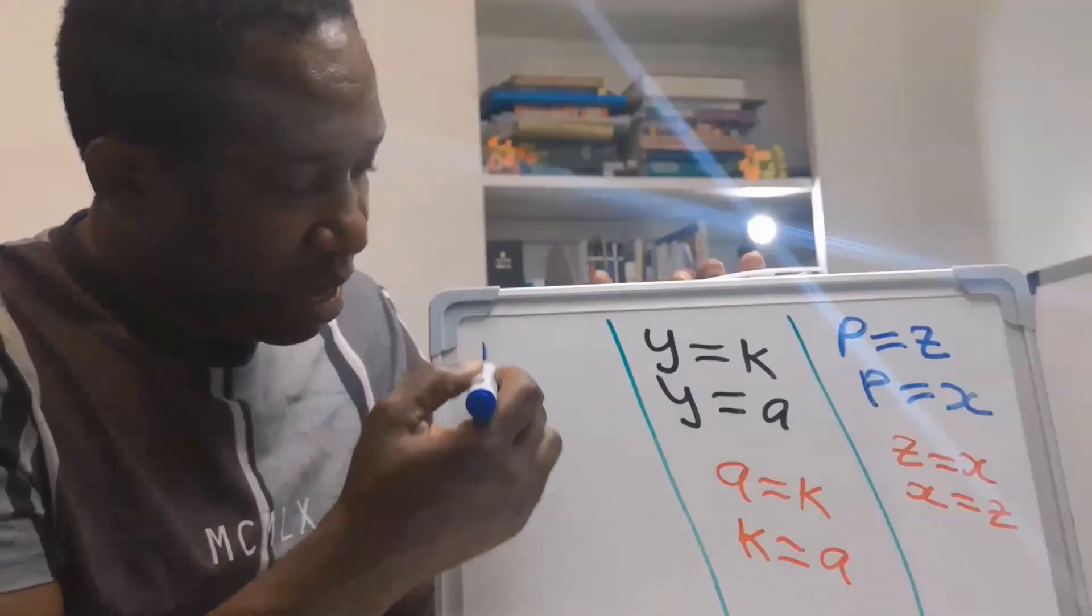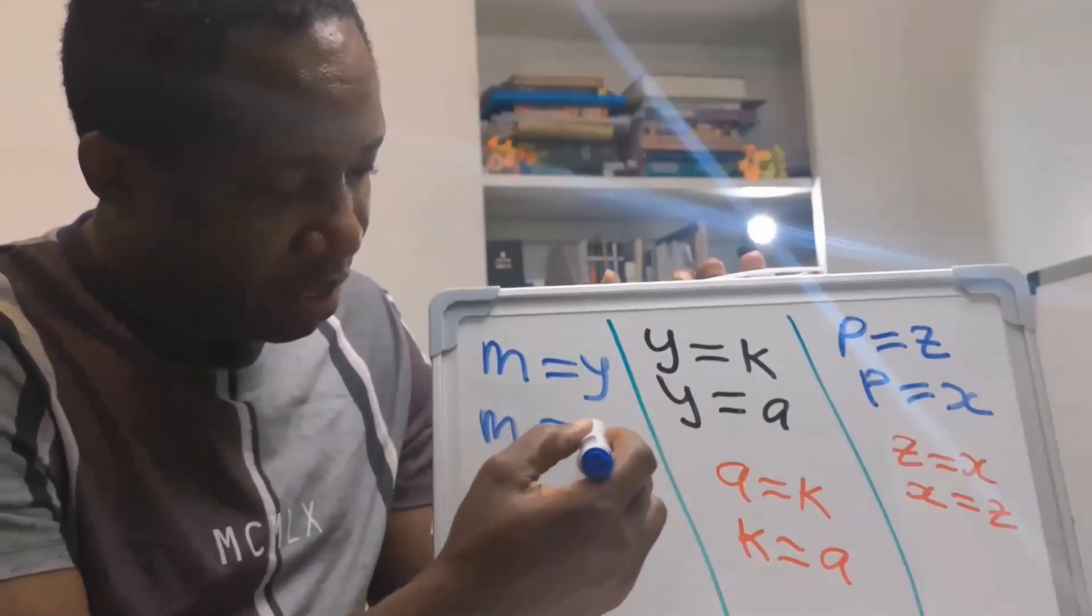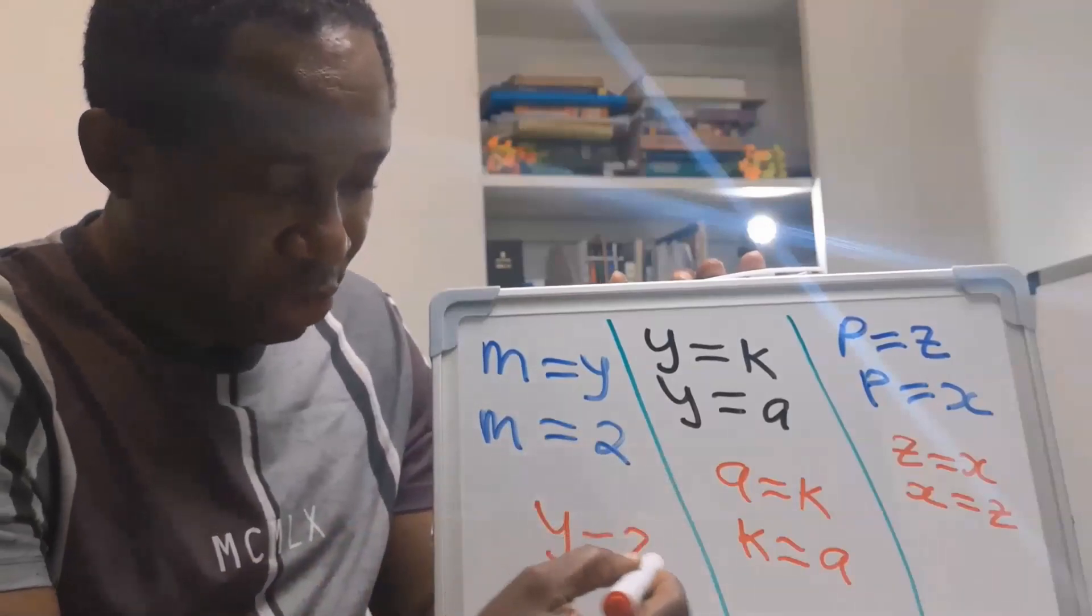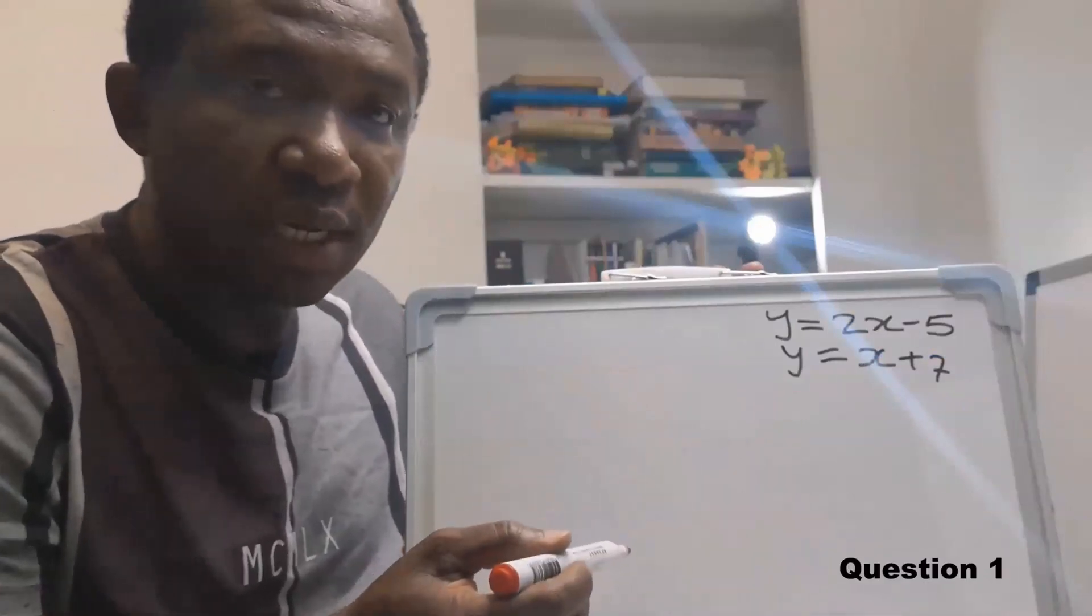Similarly, if M is Y and M is 2, this shows that Y is 2. If we have two equations like this,